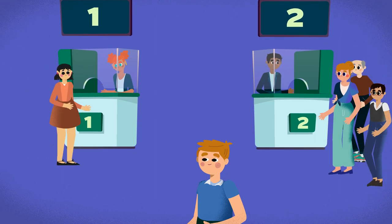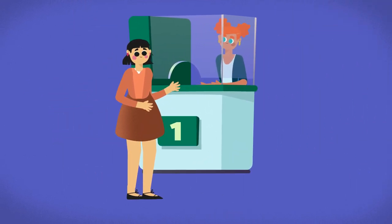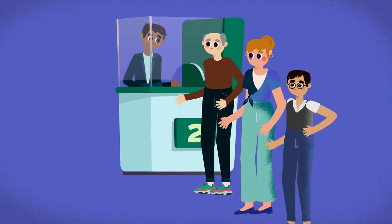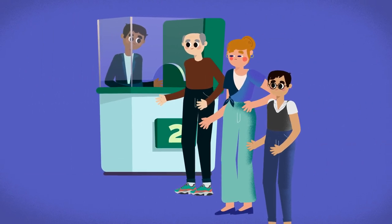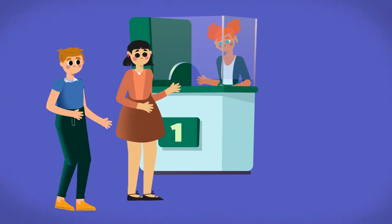Say John enters a bank and has the option to stand in Q1 or Q2. From his perspective, Q1 is shorter and moving faster than Q2, so naturally he concludes that he'll be served earlier if he chose to stand in Q1.